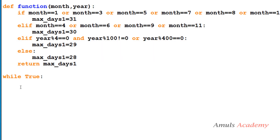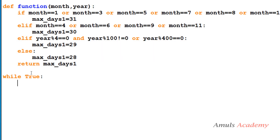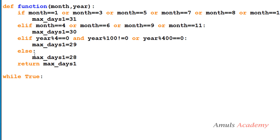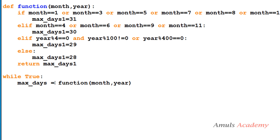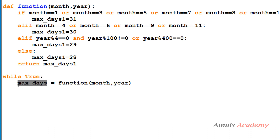This is the function definition. When we take the user input date, we first need to check whether it is valid or not — for that we need the maximum days. So I'll call the function and pass month and year. The control goes to the function, it executes, and returns the maximum days for the given month, which is stored in the variable max_days.